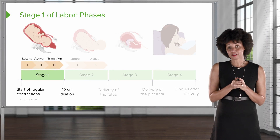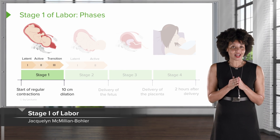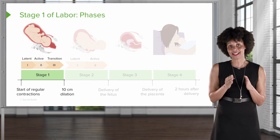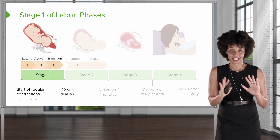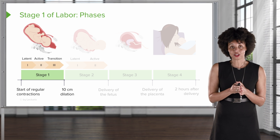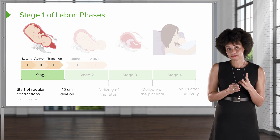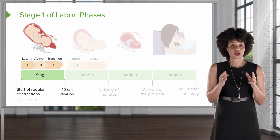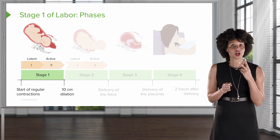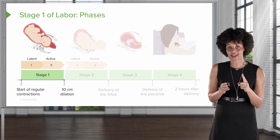Now that we've talked about the four stages of labor, we want to break this down a little bit more. We're going to look at the phases that are within the stages of labor. If you have an older textbook, you may notice that it mentions three phases. Back in 2017, the nomenclature changed so that now there are only two phases within Stage 1 of labor.